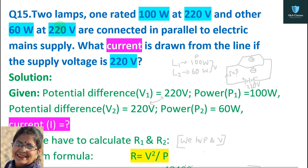Students, this numerical is from the back exercise, question number 15. Two lamps — one rated 100 watt at 220 volt and the other 60 watt at 220 volt — are connected in parallel to the electric main supply. The potential difference is the same, 220 volt, for both lamps, and they are connected in parallel.